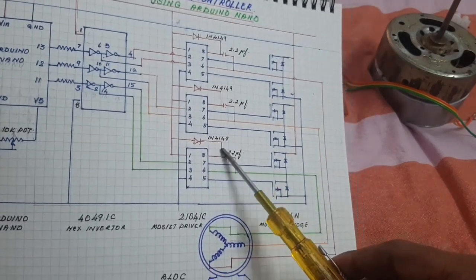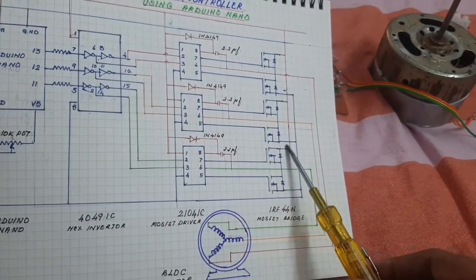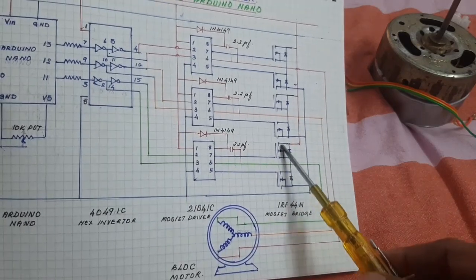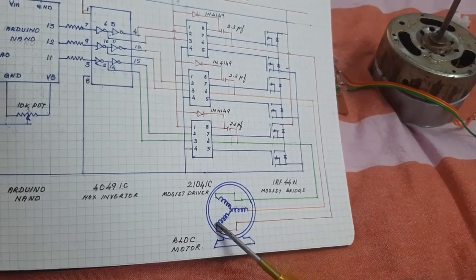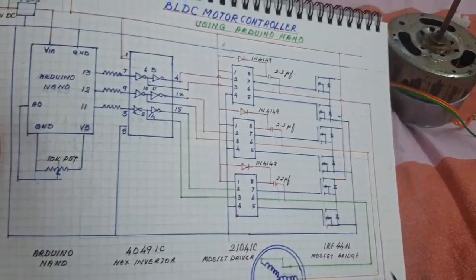The output of the MOSFET driver is given to the three-phase MOSFET and then it is given to the BLDC motor. Here look at this.